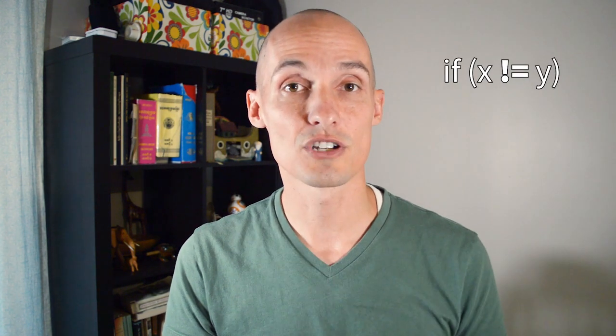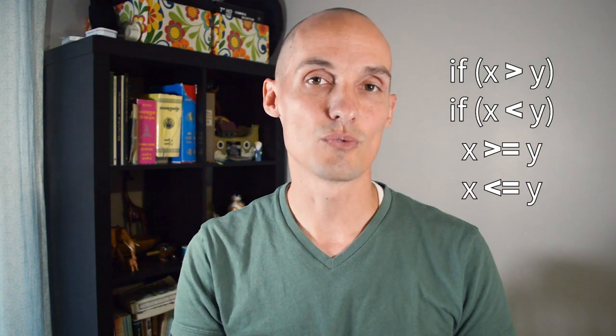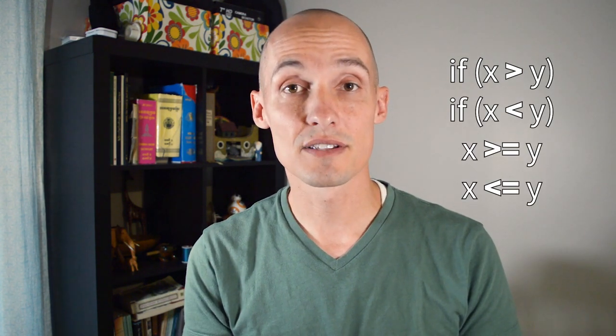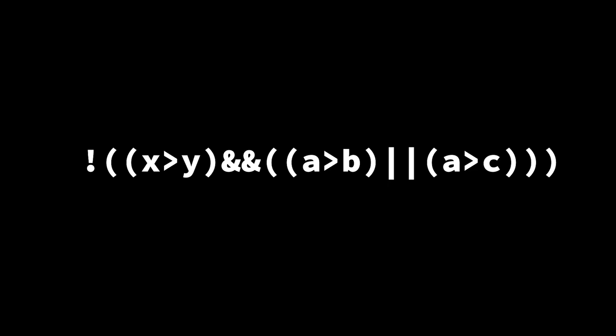We can test to see if two variables or expressions are equivalent. We can also test to see if they are not equivalent by putting an exclamation point equals. We also have tests for greater than, less than, greater than or equals, and less than or equals. Now each one of these comparisons is going to evaluate to a value of true or false. And we can combine multiple comparisons — multiple trues and falses — to create logical statements using the AND operator, the OR operator, and the NOT operator. For example, an expression will be true if x is greater than y and either a is greater than b or a is greater than c. And adding an exclamation point in front will negate the statement, turning true to false and false to true.